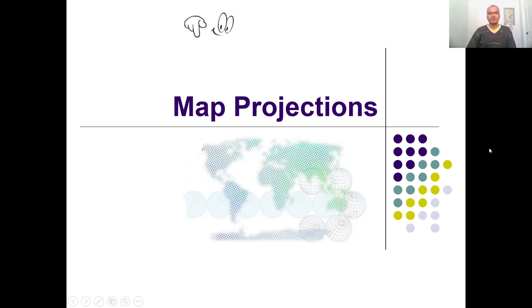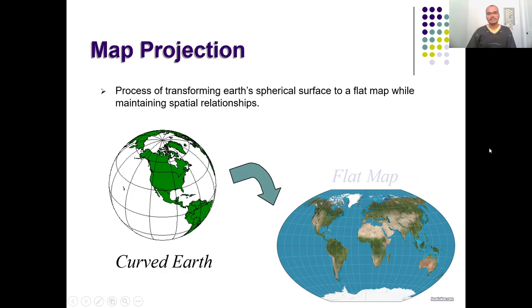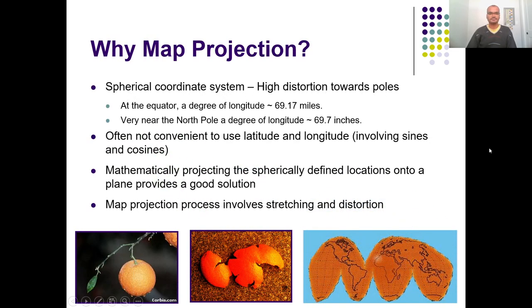Hello, in today's lecture we are going to discuss about map projections. In the last lecture we discussed about the importance of geographic coordinate systems and the process of transforming the spherical Earth's surface into a flat map to maintain some spatial relationship. Today we will cover why map projection is required, the characteristics of map projections, different types of map projections, and which coordinate system to choose. I will also demonstrate how the map appears when you apply a map projection or geographic coordinate system.